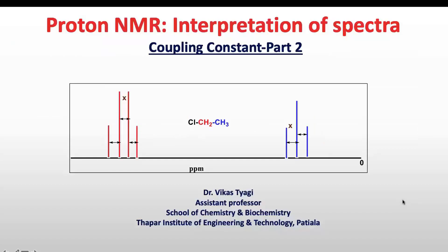Hello everyone. In our previous lecture we discussed about the coupling constant, which tells about the extent of spin-spin coupling between two neighboring protons. In this video session I will discuss about the factors affecting the magnitude of coupling between two protons.